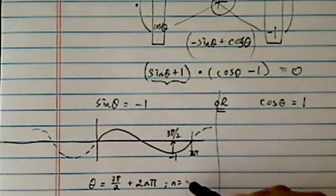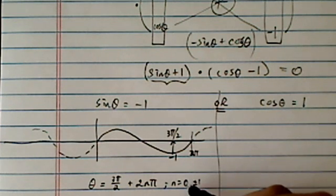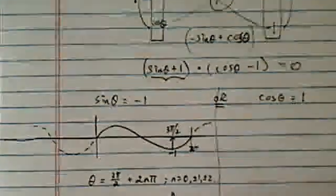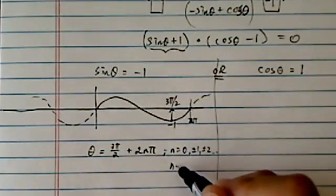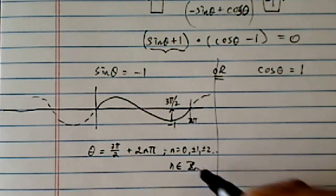so our solution is equal to three pi over two plus two n pi, where n is equal to natural numbers. Or if you want to write it out, it's zero plus minus one plus minus two, and so on and so forth. Or if you want to get fancy, you can use n belongs to the set of integers.